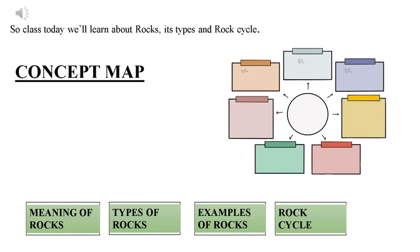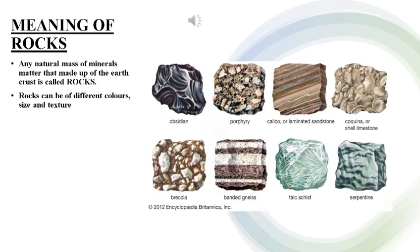So class, today we will learn about the meaning of rocks, its types, and the rock cycle with proper examples of rocks. So class, what do you understand by the term rocks? The rock means any natural mass of mineral matter up to the earth's crust is called rock.